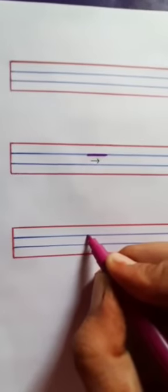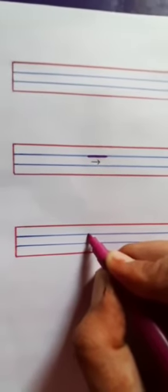So you will put your pencil on the second line and move it towards the right side. So this is how we write a sleeping line.